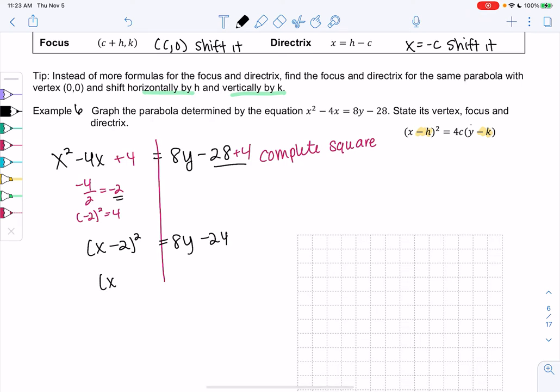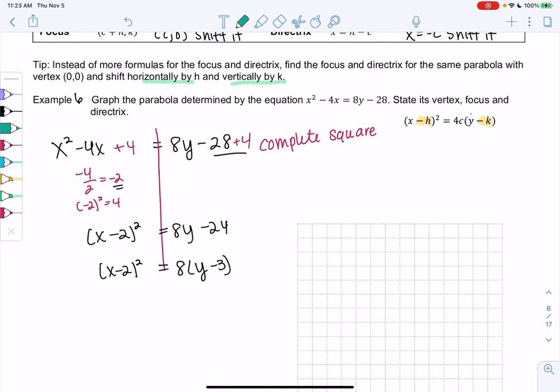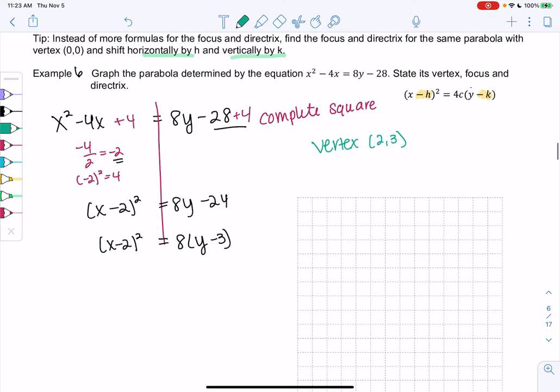8 comes out, and we get (y - 3). That looks like (x - h), so h would be 2, and (y - k) would be 3. So our vertex is now at (2,3). What else do we know? We need to find c. So we know 4c is equal to 8. So c is equal to 2.